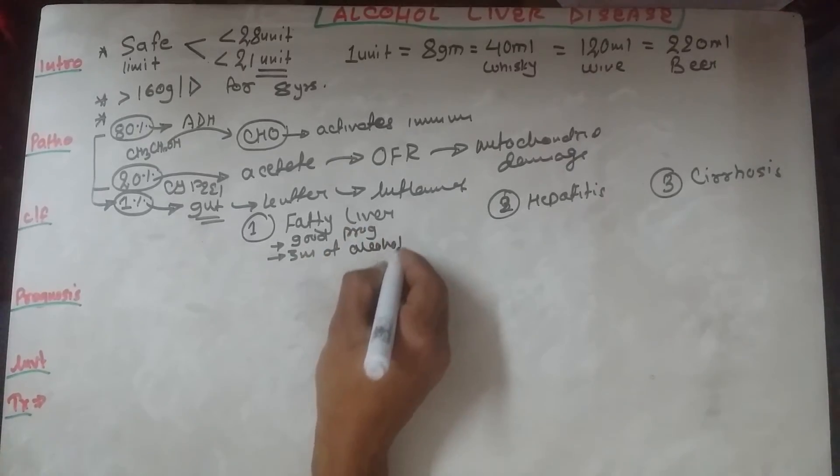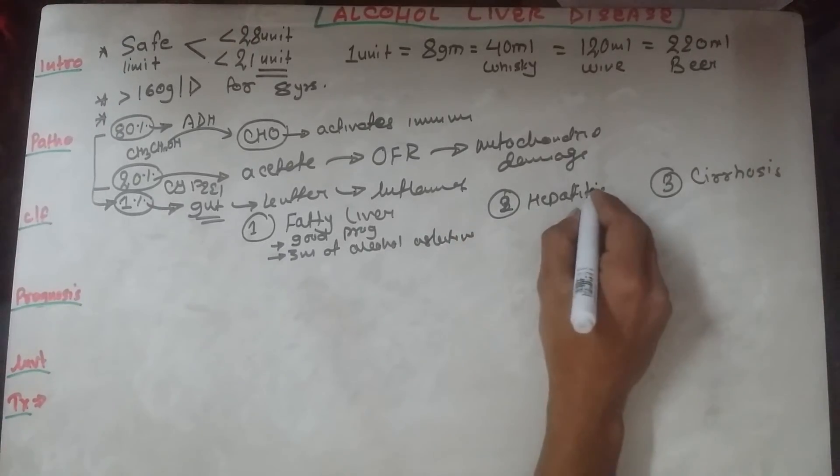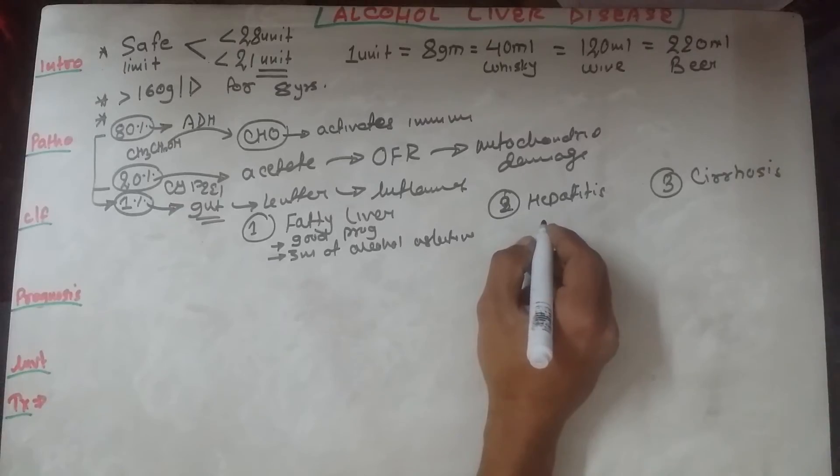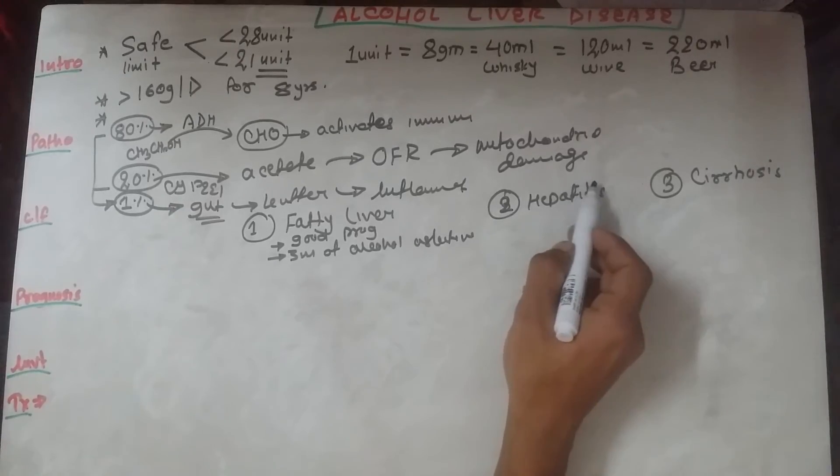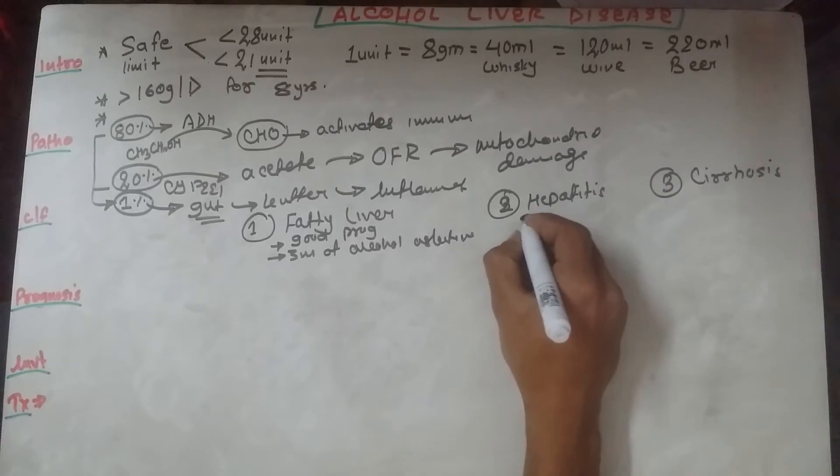Coming to alcoholic hepatitis, usually they present with jaundice. Any type of hepatitis has pre-icteric, icteric, and post-icteric phases. The complication can be portal hypertension.